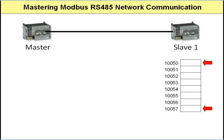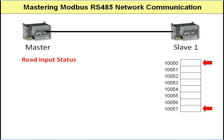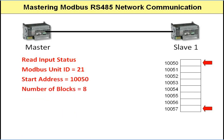The read input status command only allows you to specify a start block address and then the number of memory blocks to read from the start point. So in this example, you would configure the Modbus master to send the read input status command with the Modbus unit ID of 21 — those are correct — but instead of specifying 10,050 and 10,057 individually, it would specify a start memory address of 10,050 and a memory block length of 8. Remember this — it's extremely important.